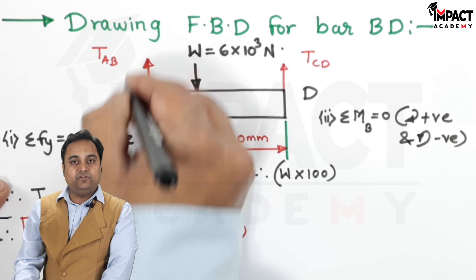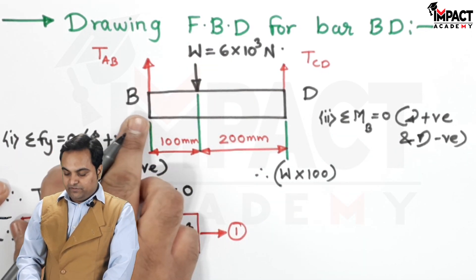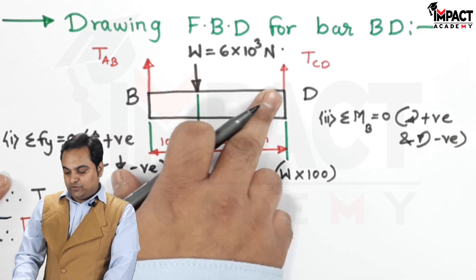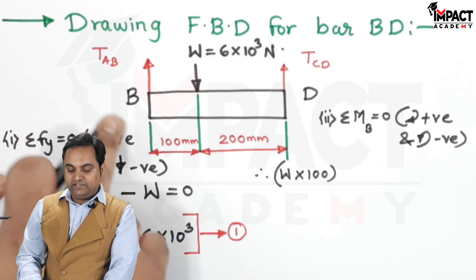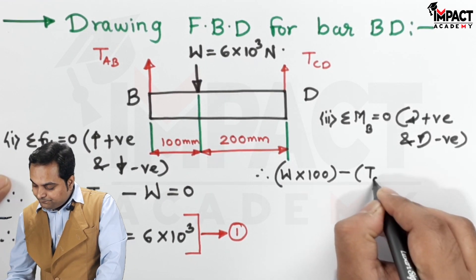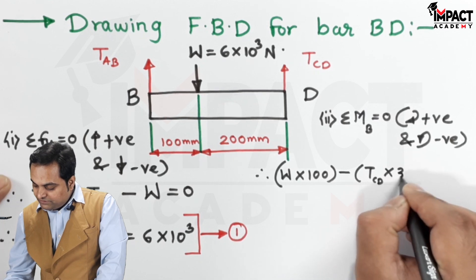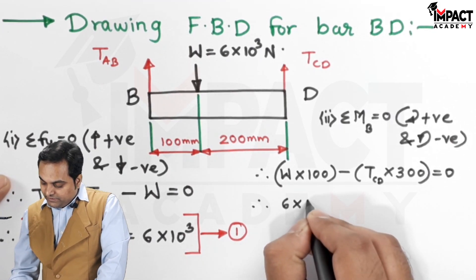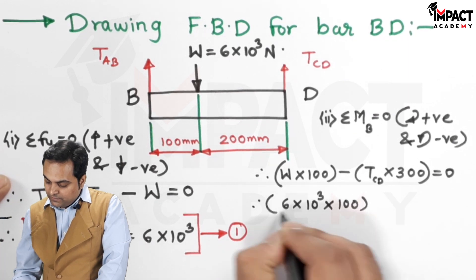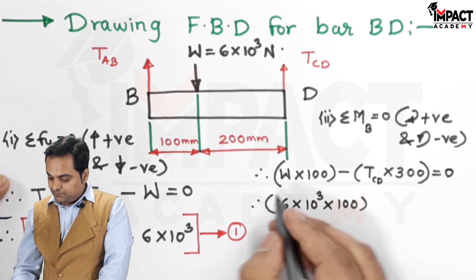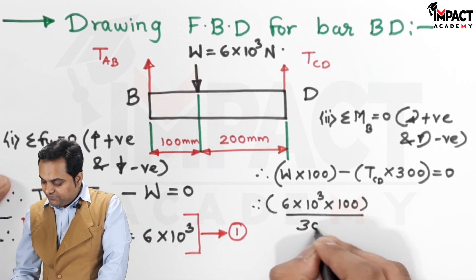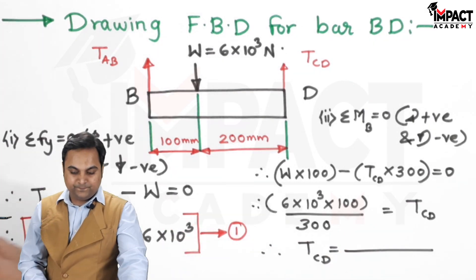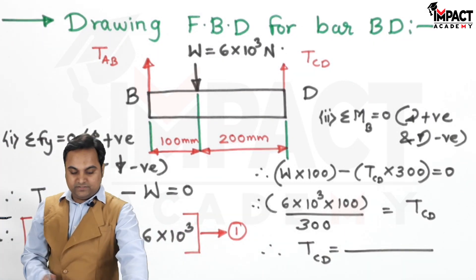Next, TAB is passing through the same point. So there is no perpendicular distance between point B and the tension in AB. So its moment would be 0 because it is passing through the same point. Now, TCD when I take the moment at point B, it is coming into the anticlockwise direction. So it is minus T suffix CD into the total distance 300, that is equal to 0. Therefore, W is 6 into 10 raise to 3 Newton minus TCD into 300 when it goes on to the other side that becomes plus. So this answer divided by 300 by keeping TCD on one side, I will get the value of T suffix CD. And my answer comes out to be, it is 2000 Newton.